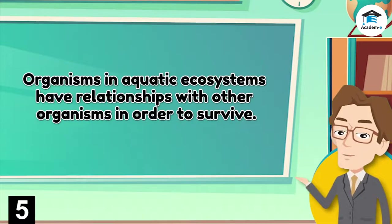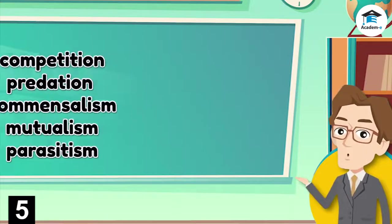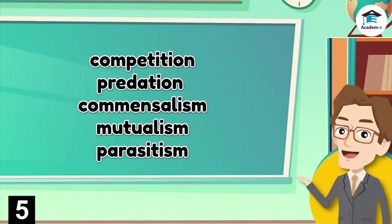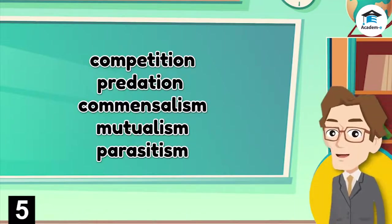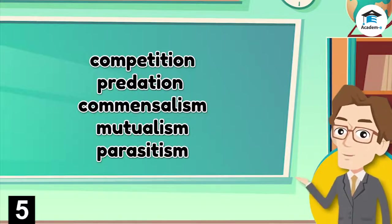Organisms in aquatic ecosystems have relationships with other organisms in order to survive. The relationships that exist among organisms in the estuarine and intertidal zones include competition, predation, commensalism, mutualism, and parasitism. These interactions may have negative or positive effects on the species.